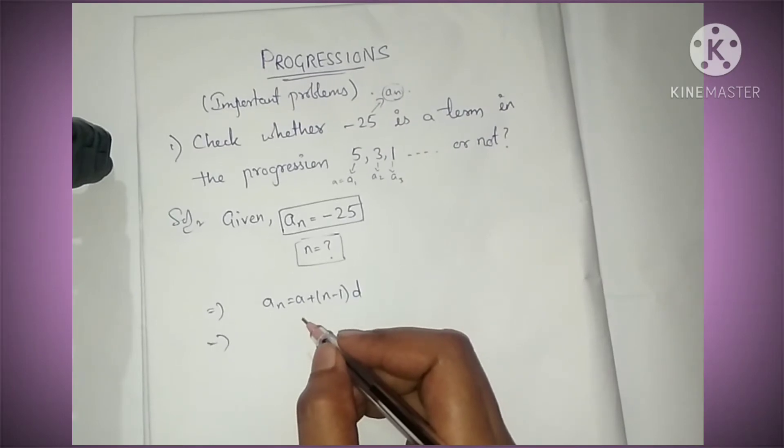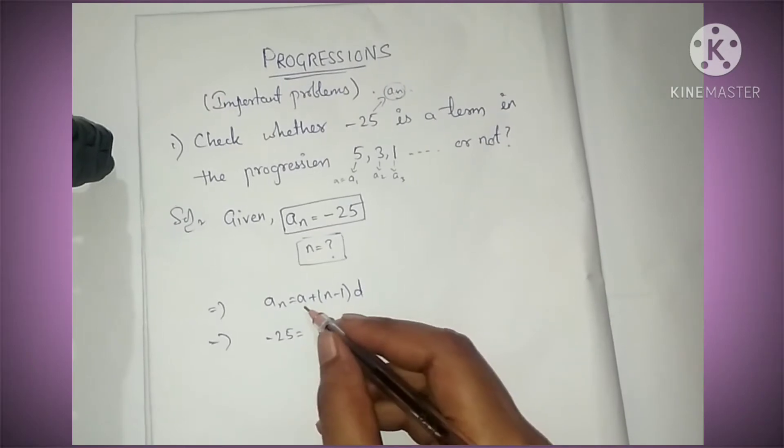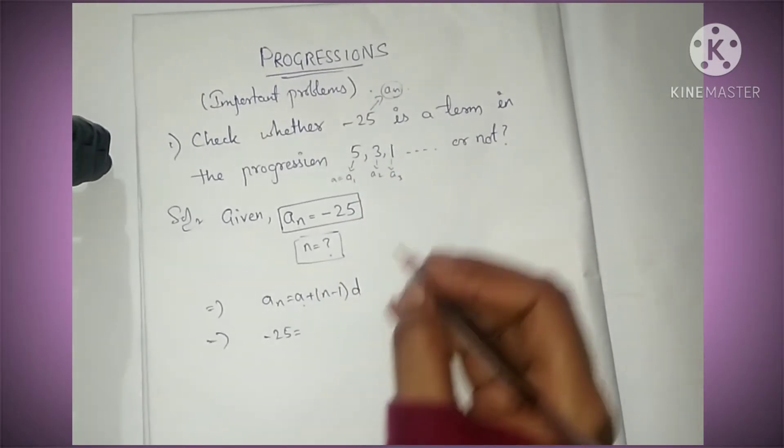The nth term -25 equals a. The first term a given is 5.